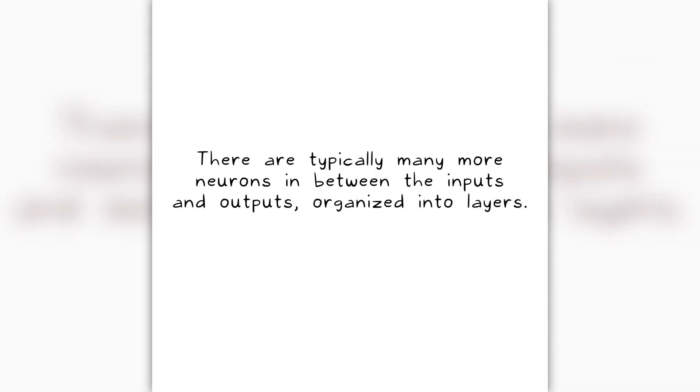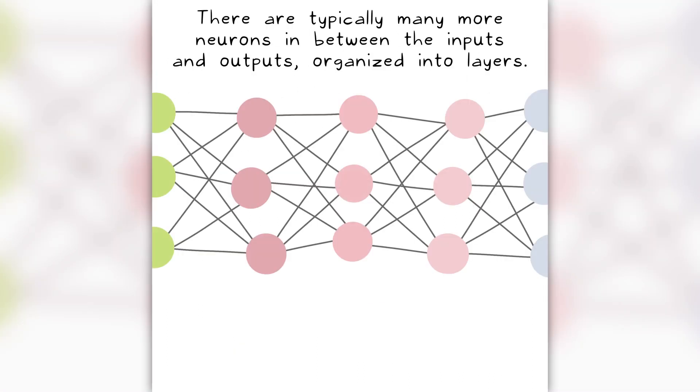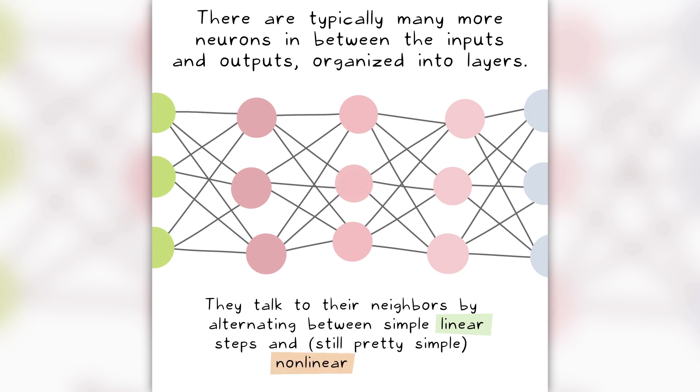There are typically many more neurons in between the inputs and outputs, organized into layers. They talk to their neighbors by alternating between simple linear steps and still pretty simple non-linear steps.